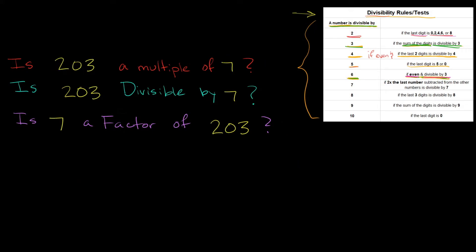Let's move on to 7. Is 203 a multiple of 7, or is it divisible by 7? Is 7 a factor of 203? The rule for 7 says: a number is divisible by 7 if 2 times the last digit, subtracted from the remaining digits, is divisible by 7. Let's break it down. The last digit of 203 is 3. So 2 times 3 equals 6.